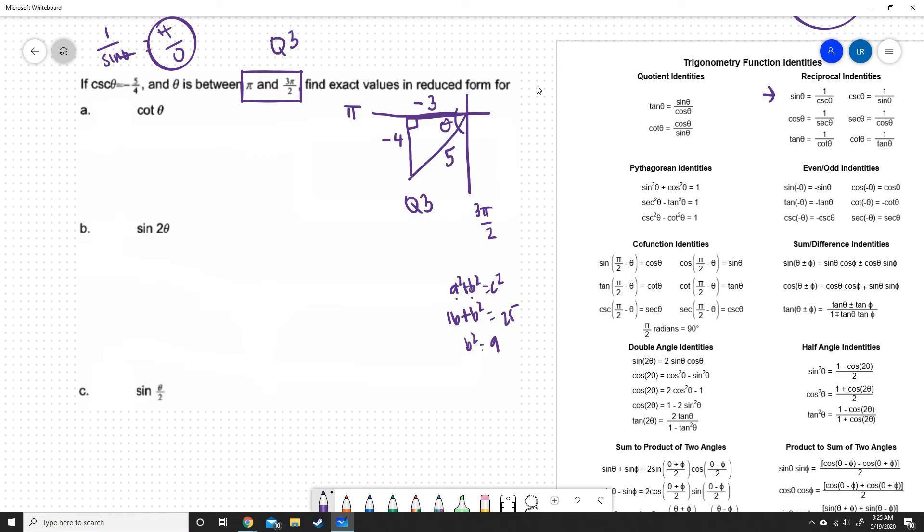Now we have all of the information to figure out what sine, cosine, tangent, cotangent, all of that stuff is. So cotangent is the reciprocal of tangent. Tangent is opposite over adjacent, so cotangent would have to be adjacent over opposite. Adjacent is negative 3, opposite is negative 4. Negative 3 over negative 4 is simply 3 over 4. So there's your cotangent.